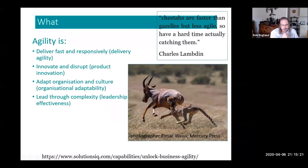There's this lovely quote from Charles Lambden, which is, cheetahs are faster than gazelles, but less agile. So they have a hard time actually catching them. So a cheetah can outrun a gazelle, but a gazelle can outturn a cheetah. So agility is not about being a cheetah, it's about being a gazelle. Agility is about being able to change direction.